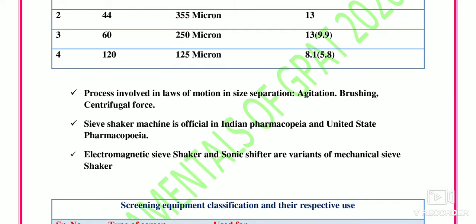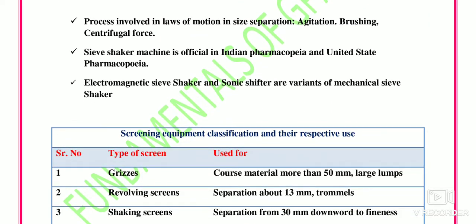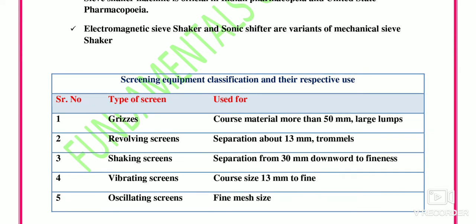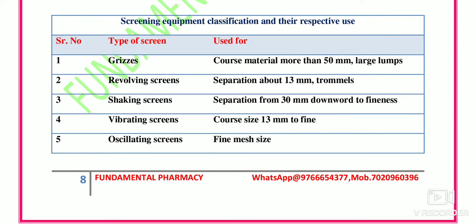The motion processes involved in size separation are three: agitation, brushing, and centrifugal force. The sieve shaker machine is official in India Pharmacopoeia and US Pharmacopoeia. Electromagnetic sieve shaker and sonic sifter are variants of the mechanical sieve shaker — remember this important point.